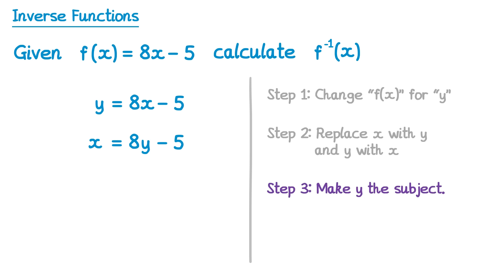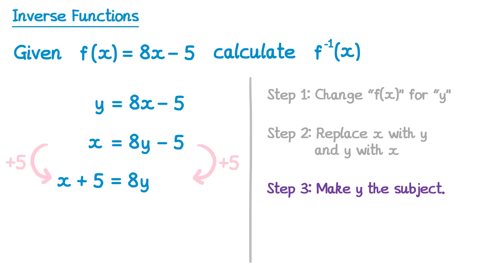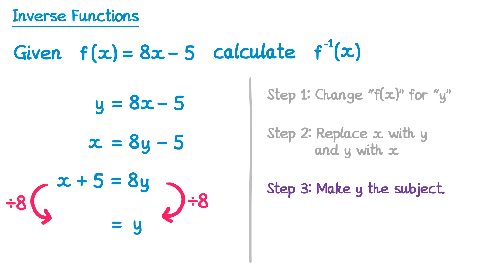Step 3 is to make y the subject. First, add 5 to both sides: on the right that cancels the negative 5, leaving 8y, and on the left we get x + 5. Then divide both sides by 8: on the right 8y ÷ 8 is just y, and on the left we get (x + 5) ÷ 8. Step 3 is complete.